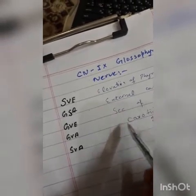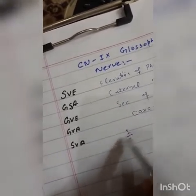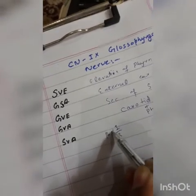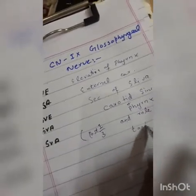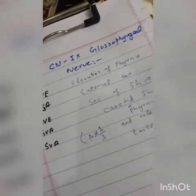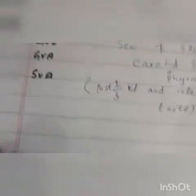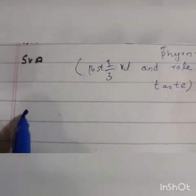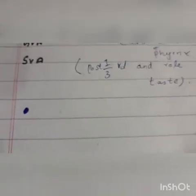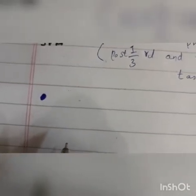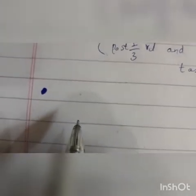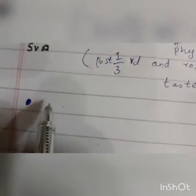Special visceral efferent has its role in taste of the posterior one-third of the tongue. The glossopharyngeal nerve is basically the nerve of the first branchial arch and contains somatic visceral efferent, special visceral efferent, and general visceral efferent fibers.